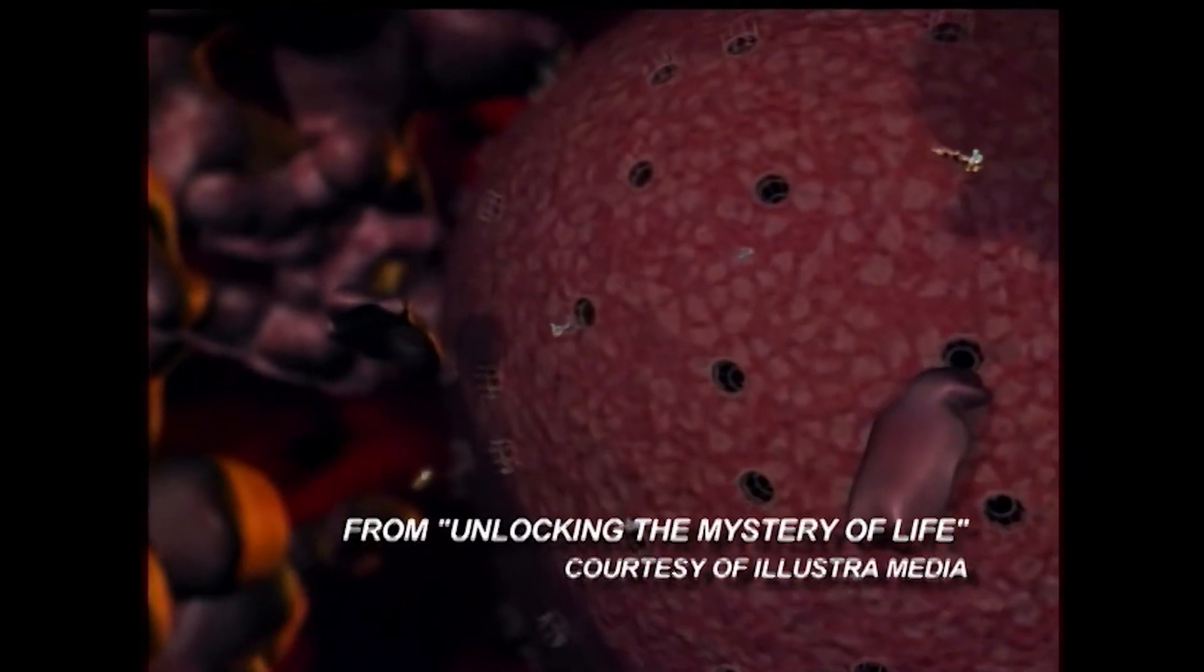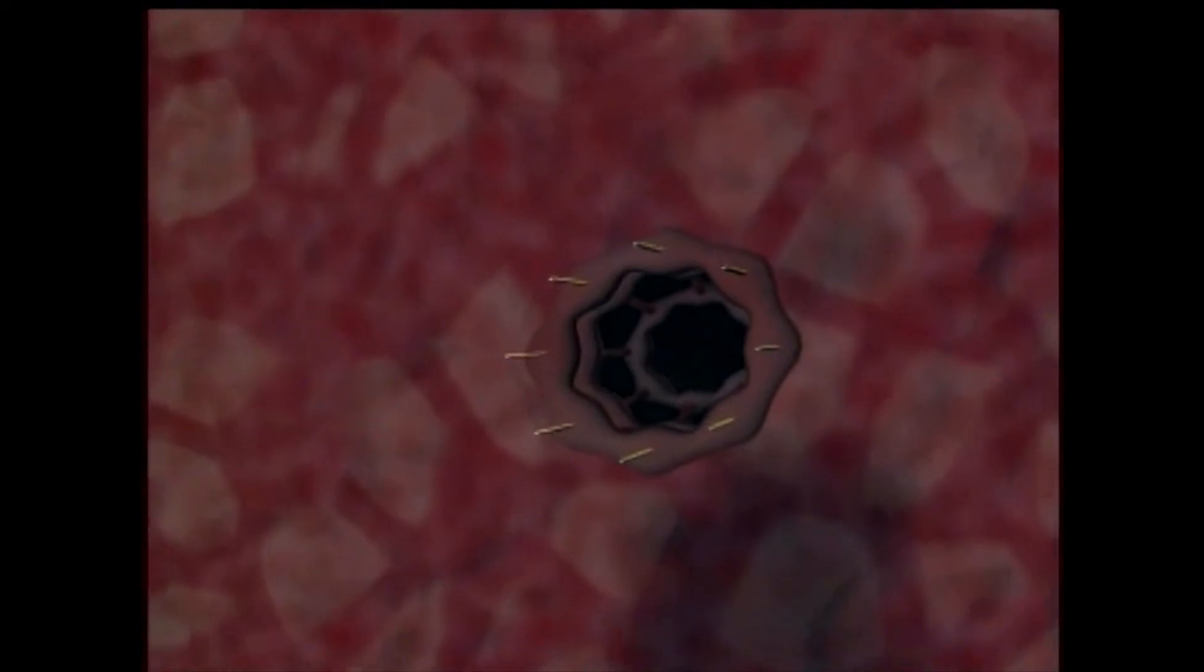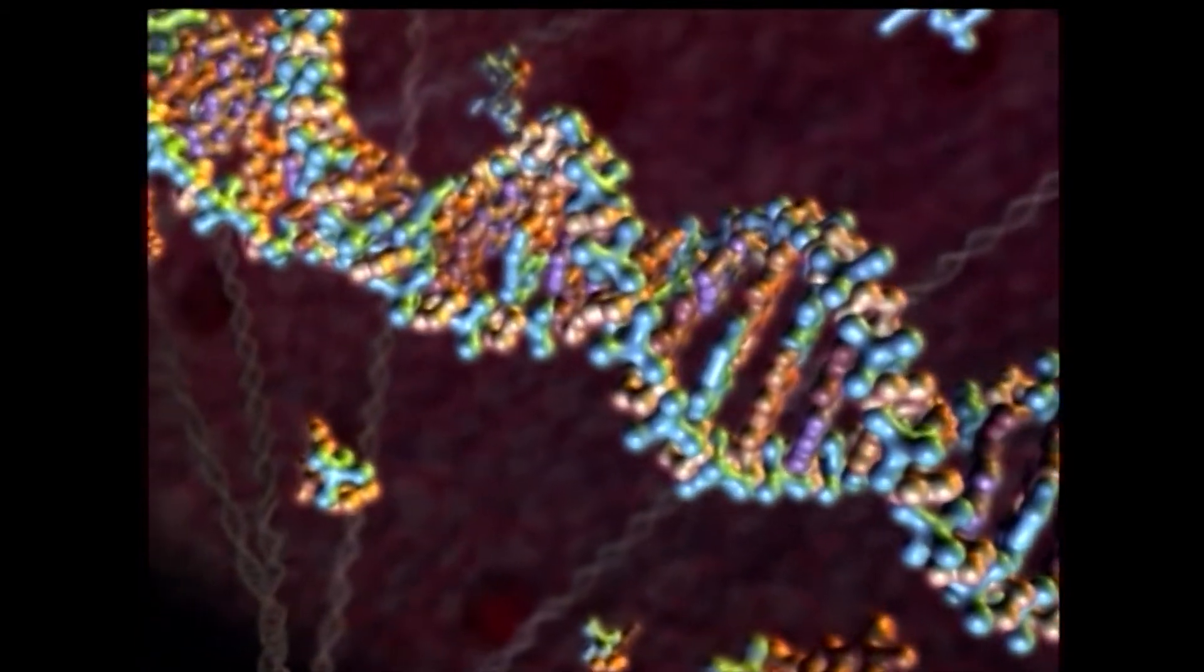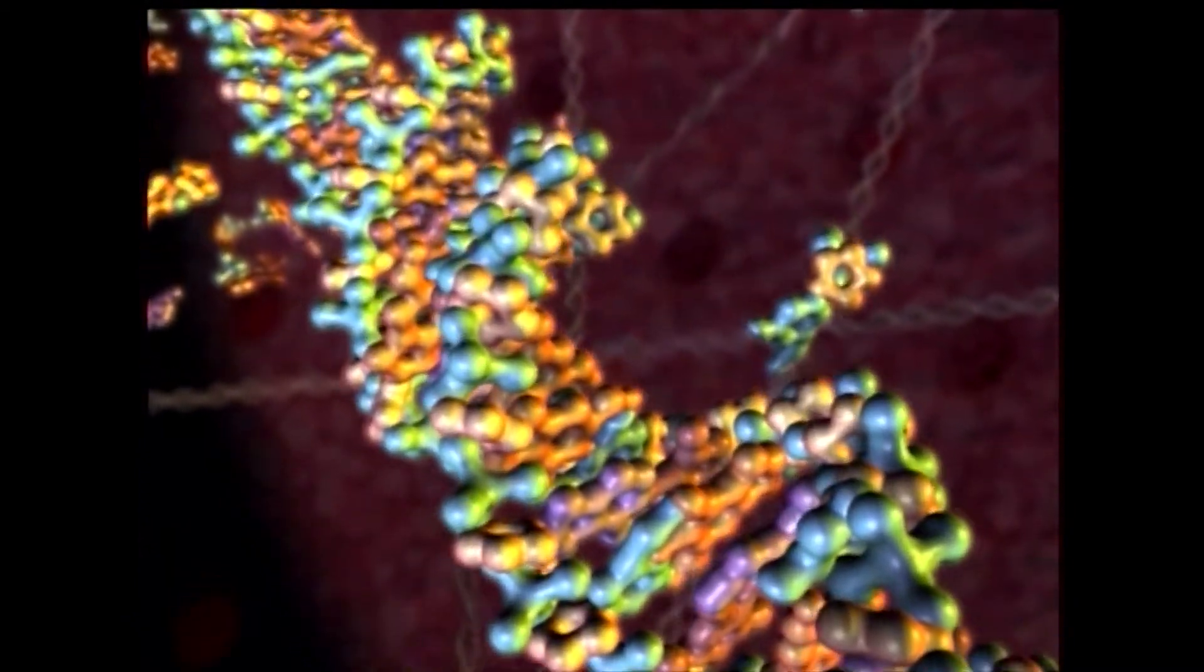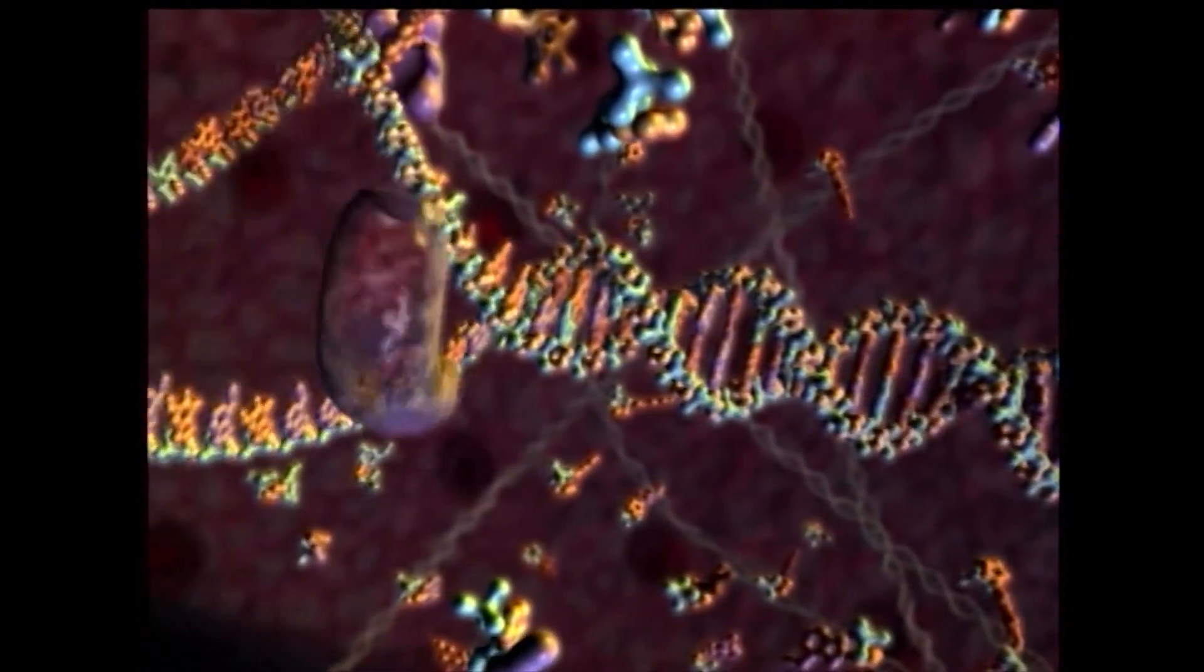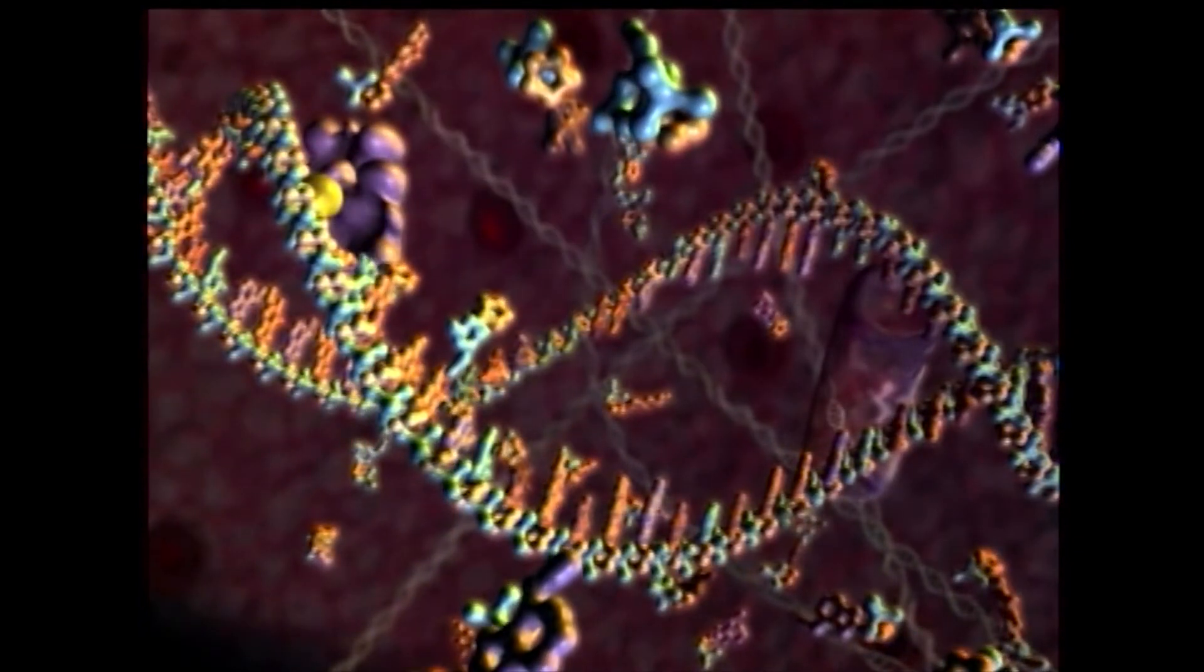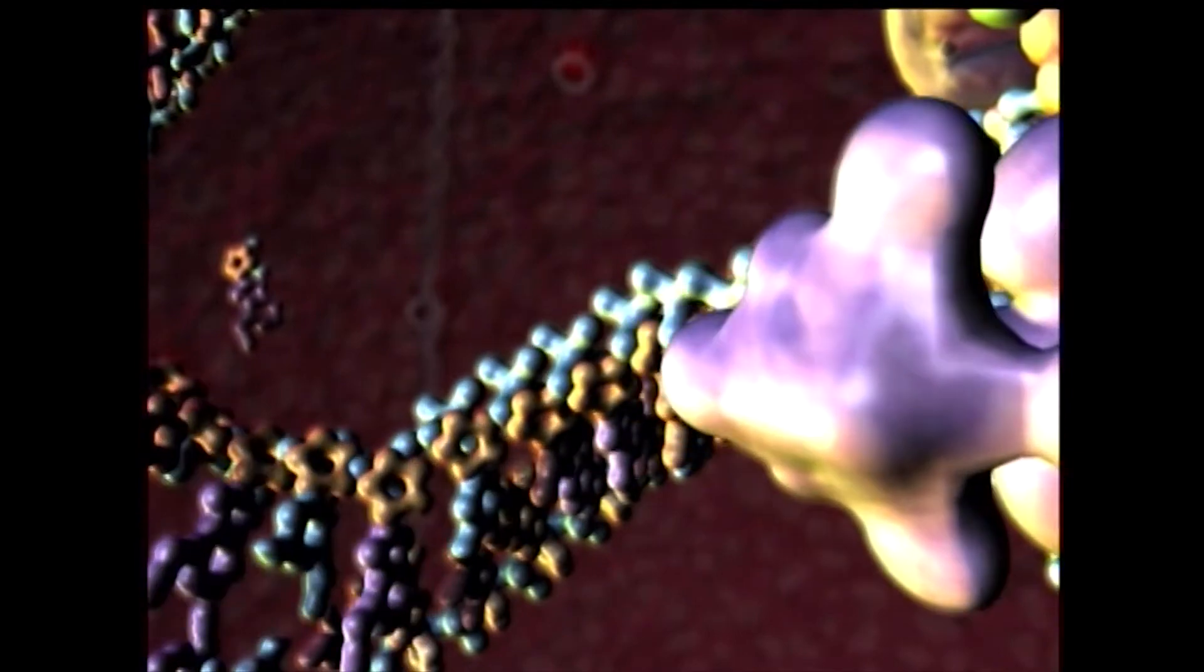With computer animation, we can enter the cell to view this remarkable system at work. After entering the heart of the cell, we see the tightly wound strands of DNA, storehouses for the instructions necessary to build every protein in an organism. In a process known as transcription, a molecular machine first unwinds a section of the DNA helix to expose the genetic instructions needed to assemble a specific protein molecule. Another machine then copies these instructions to form a molecule known as messenger RNA.